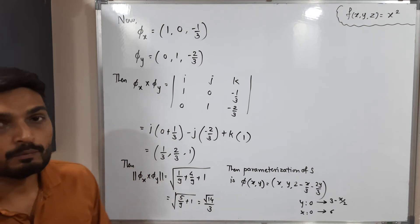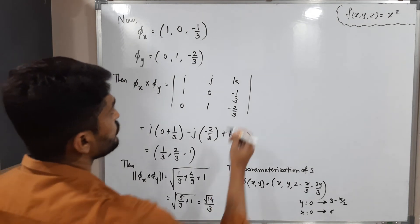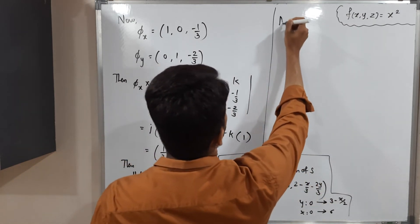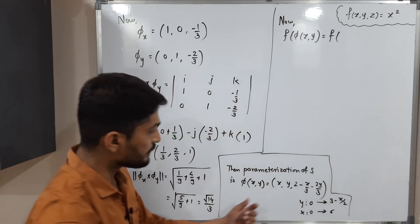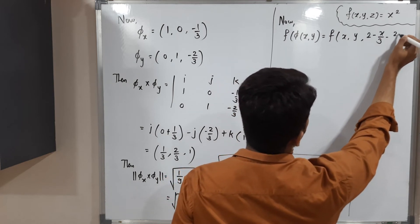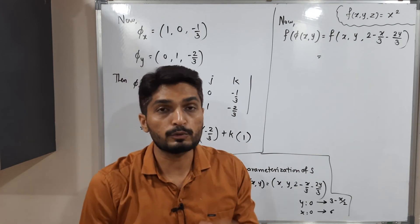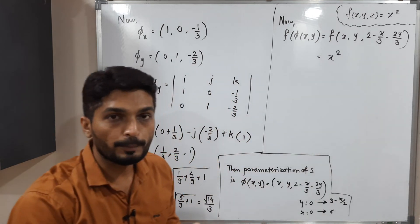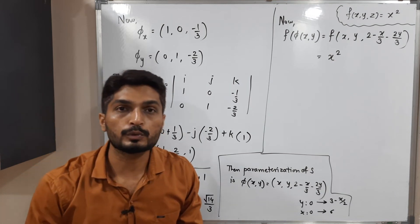Now we find F(Phi(x, y)). Substituting Phi(x, y) = (x, y, 2 - x/3 - 2y/3) into F(x, y, z) = x², we get F(Phi(x, y)) = x², since the definition of F uses only the first component (x²). So F(Phi(x, y)) = x².